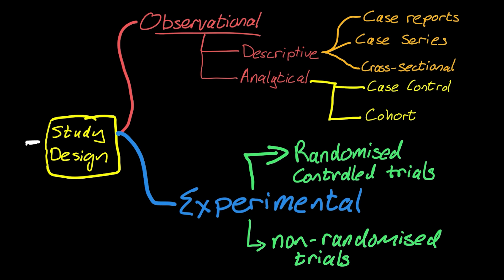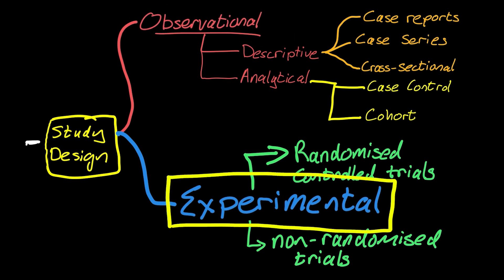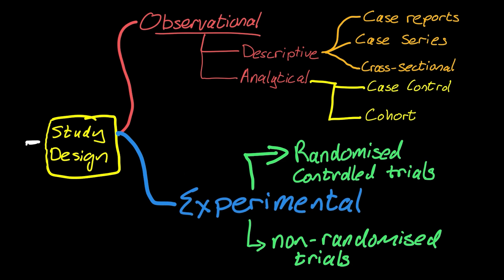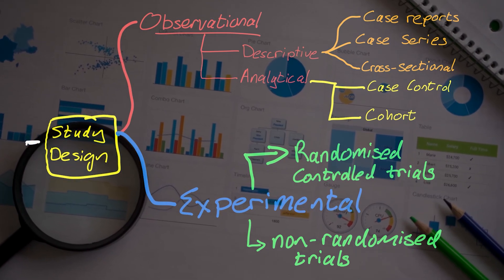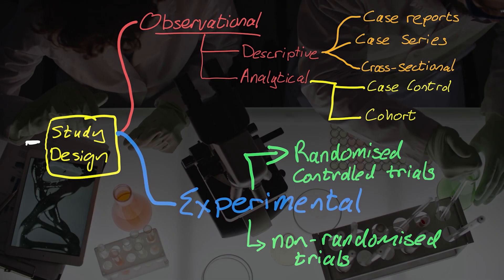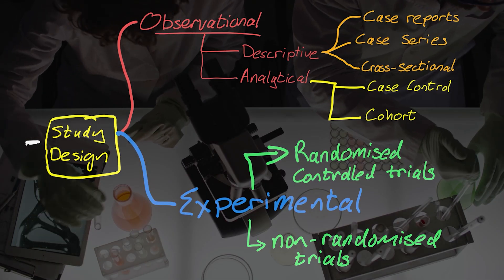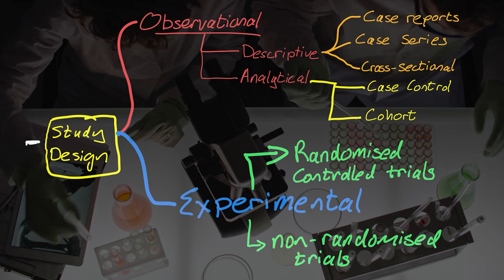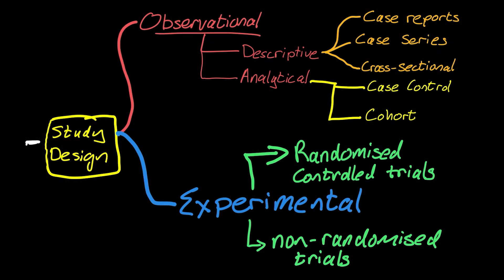There's two big buckets that we really think about: observational and experimental. Observational studies is we're really just looking at the world as it is, and we're trying to understand something about it. Experimental studies is we do something, we do an experiment, we intervene, and we see what was the impact of that intervention.